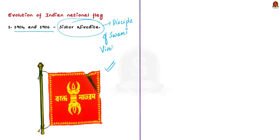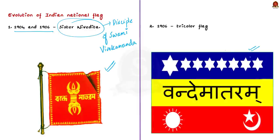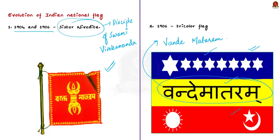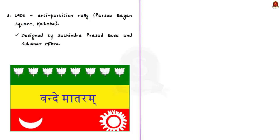After Sister Nivedita's flag, another flag was designed in 1906. It was a tricolour flag with three equal stripes of blue, yellow and red, and it had the terminology Vande Matram written in Hindi. It also had symbols like the sun, moon and stars. In addition, in 1906 itself another flag came into existence — it was hoisted on August 7th at an anti-partition rally in Parsi Bagan Square in then-Calcutta. This is also a tricolour flag with Vande Matram but different colours, believed to have been designed by Sachindra Prasad Bose and Sukumar Mitra. So the tricolour tradition started in 1906.